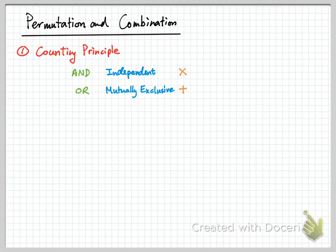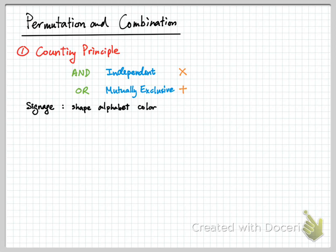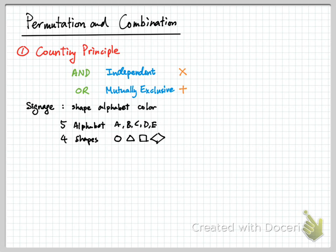Here is an example. If I want to design a signage, the signage consists of one shape, one alphabet, and a color. There are three parameters. For the shape, maybe a circle or a triangle. For the alphabet, A, B, C, D, E. For the color, maybe red, pink, green, or orange. You have five alphabets and four shapes — a circle, a triangle, a square, and a diamond.